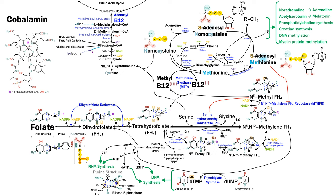Let's look at B12 deficiency. This is often through malabsorption because it's such a complex molecule — for example, the autoimmune disease pernicious anemia, as well as other diseases of the gut or through acid suppression. It can also be through decreased intake; for example, vegans do not have a natural source of B12 and need to take it through supplements or fortified foods. Finally, there are some genetic diseases of processing and one particular drug reaction we'll discuss later.